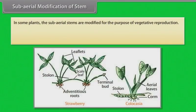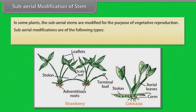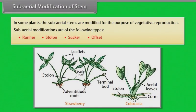In some plants, the subaerial stems are modified for the purpose of vegetative reproduction. Subaerial modifications are of the following types: runner, stolon, sucker, and offset.